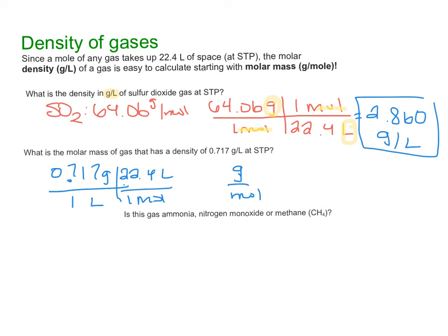When we do that, we've cancelled out our liters, we've got grams up top, we've got moles on bottom. That's it. We've got to take 0.717, multiply it by 22.4, and you're going to get 16.1 grams per mole.